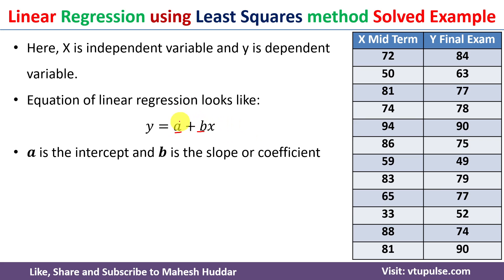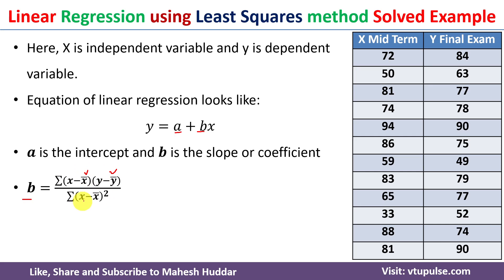The question is how to calculate the values of a and b. To calculate b, we use the equation: b equals the summation of (x minus mean of x) multiplied by (y minus mean of y), divided by the summation of (x minus mean of x) squared. Once we get b, we use the equation: mean of y equals a plus b times mean of x, and rearranging gives us the value of a.